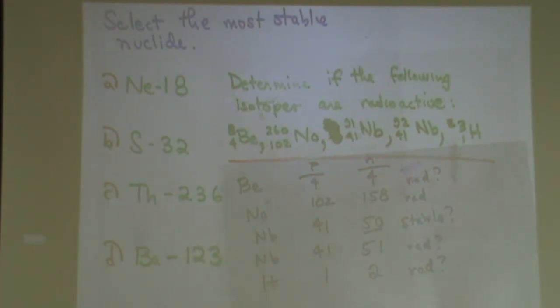So if I had to answer this question, determine if the following isotopes are radioactive? I would guess the first, second, fourth, and fifth are likely radioactive. And if anything's stable, it's the third one. Any questions on those?